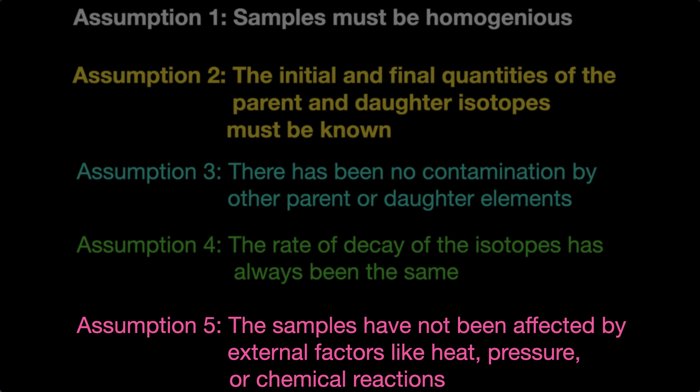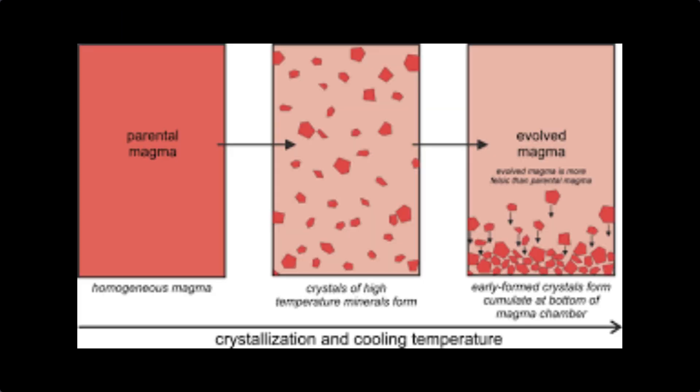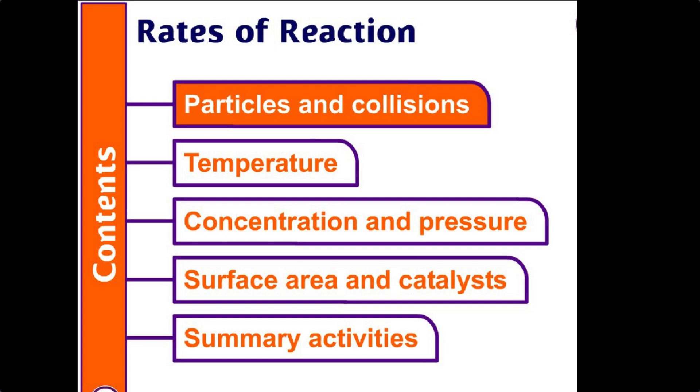Assumption five: the samples have not been affected by external factors like heat, pressure, or chemical reactions. Almost all radiometric dating is done on volcanic rocks. But it's been found that in underground magma chambers there are very different conditions in different places in the same magma melt — different temperatures leading to fractional crystallization, different rates of chemical reaction, and other processes. There are very substantial variations in concentrations of elements, including parent and daughter elements, in various places in the magma chambers. The radiometric believers tend to be as dismissive, strident, and confident as the young lady we met in the previous episode.